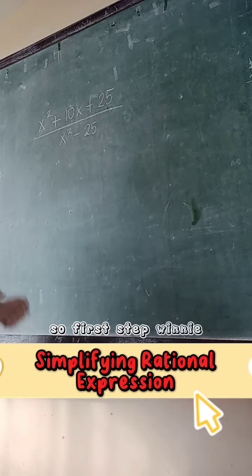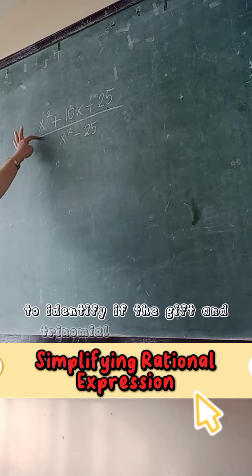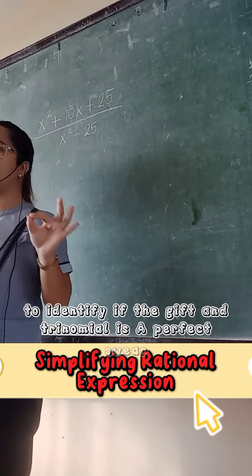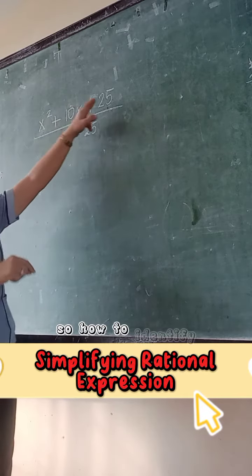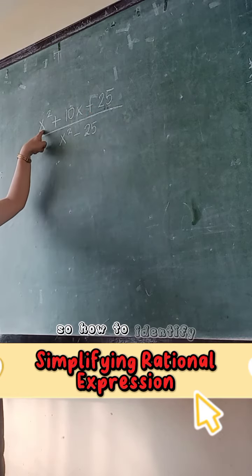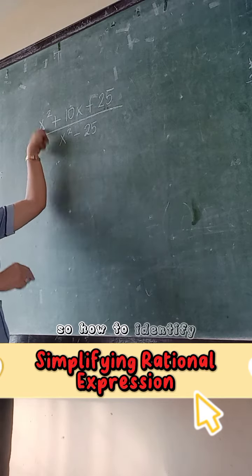So first step, we need to identify if the given trinomial is a perfect square. So how to identify? Identify the first term and the last term. So x squared is a perfect square? Yes. How about 25?